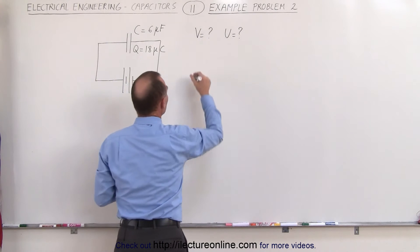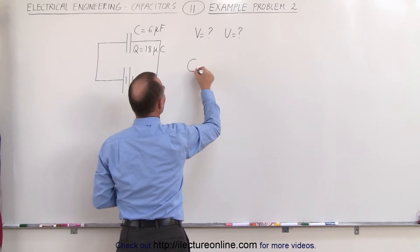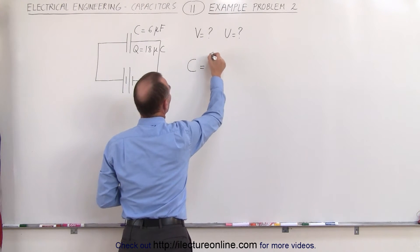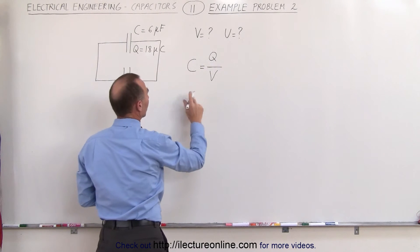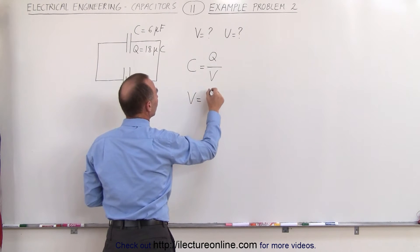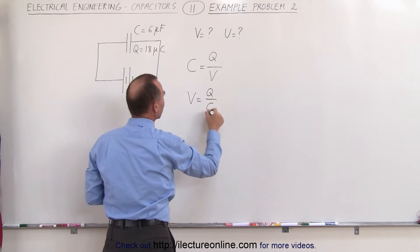Again, we use the equation of the definition of the capacitance, where the capacitance is equal to the ratio of the charge collected on the capacitor divided by the voltage across the capacitor. Therefore, the voltage is equal to the charge divided by the capacitance.